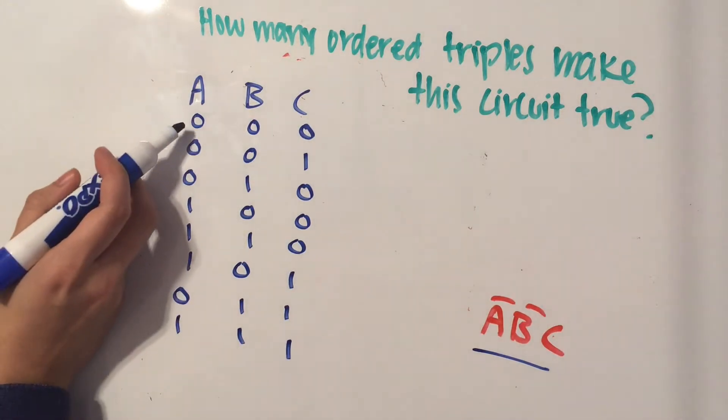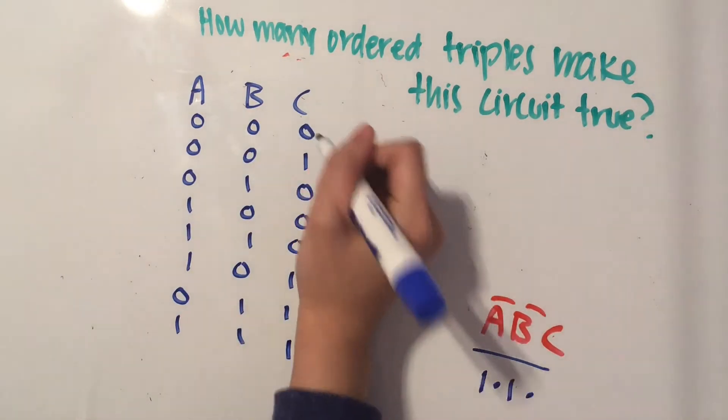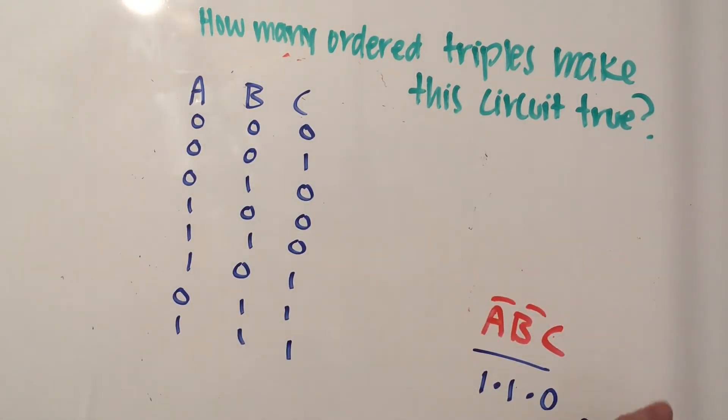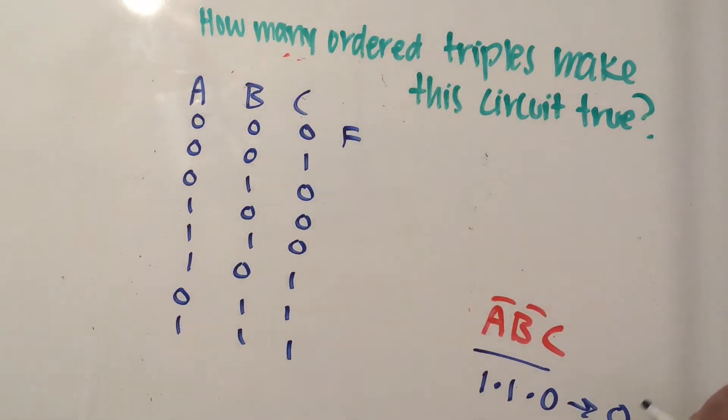So if we put in zero as A, then NOT A is going to be one. We're multiplying that by NOT B, which will also be one, times C, which is zero, and anything times zero will give us zero. So that gives us false, because zero leads to false, and then one is true.